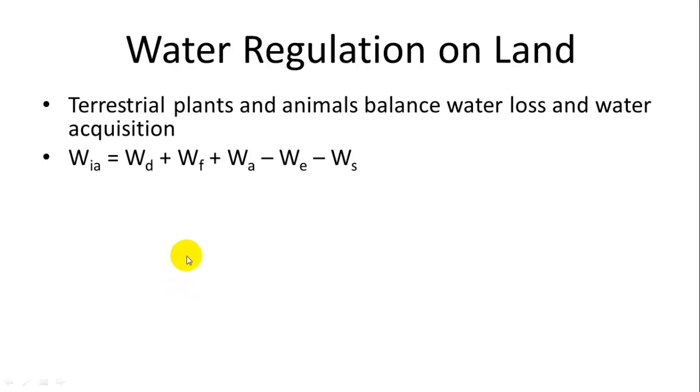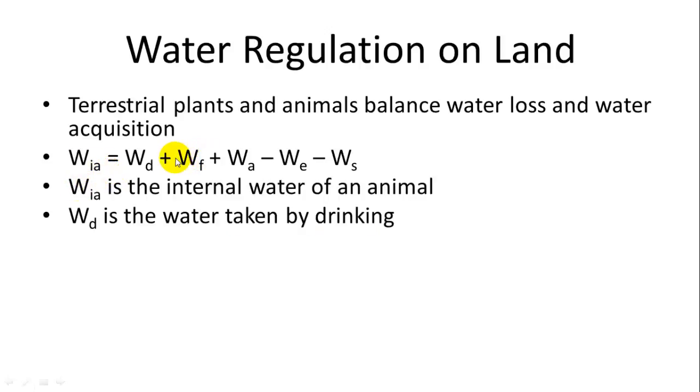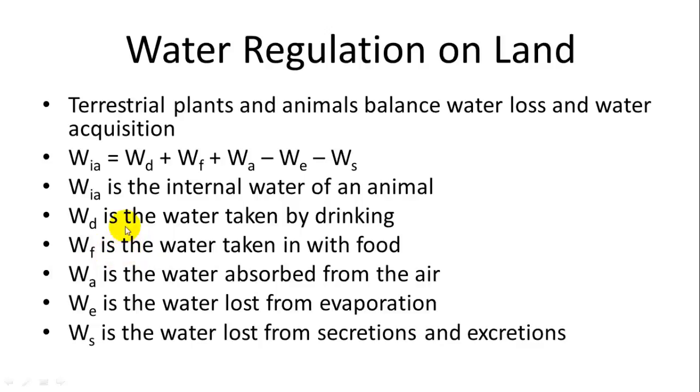All right. So when plants and animals evolved the ability to live on terrestrial environments, they had to deal with no longer being surrounded by water. So they have this balance between water loss and water acquisition that needs to be accounted for. So this equation is a matter of water regulation. So WIA is the internal water of an animal. WD is the drinking water taken by the animal, so it can find a water source and drink, and that's always going to be positive. WF is the water taken in with food. WA is the water absorbed from the air. And then you have to subtract the amount of water lost from evaporation and from secretions and excretions, such as in urine or defecation.